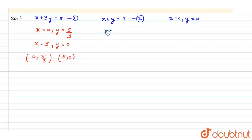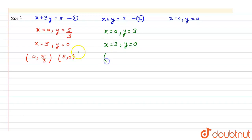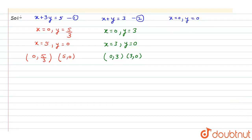For equation 2, put x equals 0 to get y equals 3. Put y equals 0 to get x equals 3. So the points are (0, 3) and (3, 0). Also, x equals 0 and y equals 0 means the origin.